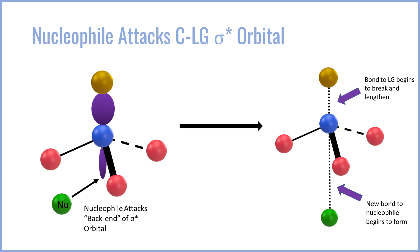However, when that orbital gets filled by the nucleophile's electrons, it's no longer acting as an anti-bonding orbital to the nucleophile — it's acting as a bonding orbital. So at the same time, a new bond to the nucleophile begins to form. The carbon loses its electron pair and bond to the leaving group, but gains a new electron pair and a new bond from the nucleophile.